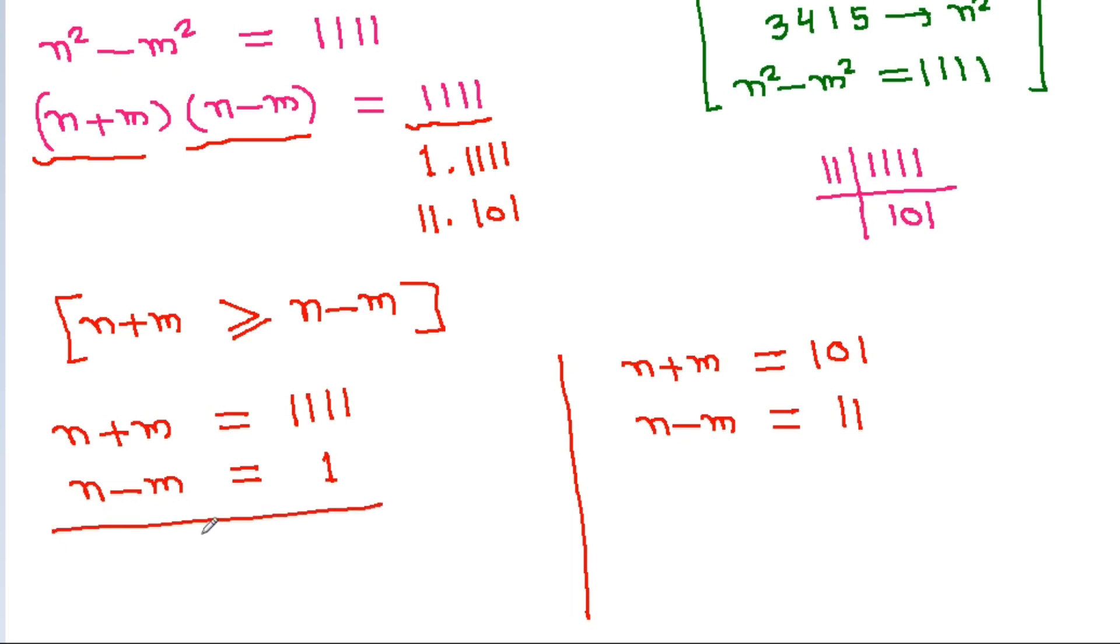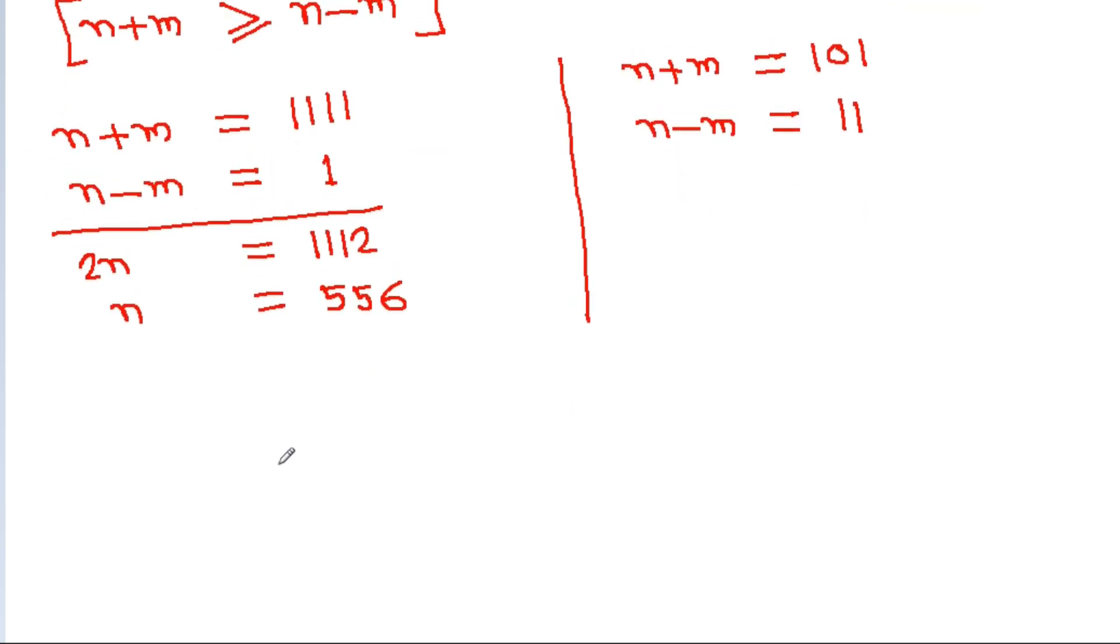If we add both equations then M will get cancelled, and we will get 2N equals 1112. So N will be equal to 556. And we have N minus M equals 1, that means M will be equal to 555.